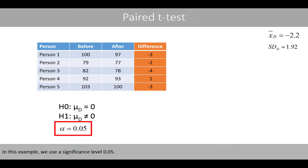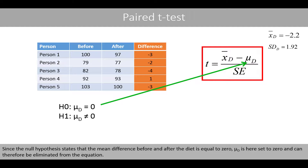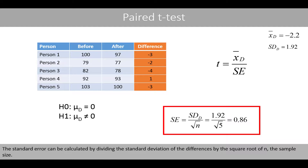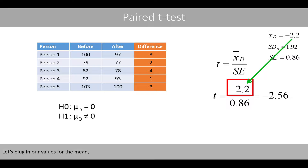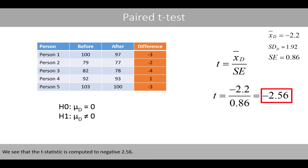In this example, we use a significance level of 0.05. The general t-statistic is computed as the mean of the differences minus some hypothesized value, divided by the standard error of the mean of the differences. Since the null hypothesis states that the mean difference is equal to zero, mu_d is set to zero and can be eliminated from the equation. Thus, the t-statistic of a paired t-test is simply the mean of the differences divided by the standard error of that mean. The standard error is calculated by dividing the standard deviation of the differences by the square root of n, the sample size, giving a standard error of about 0.86. Plugging in the values, the t-statistic is computed to be negative 2.56.